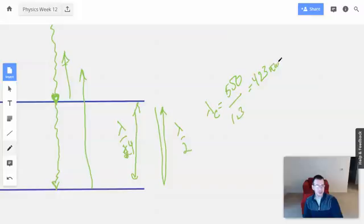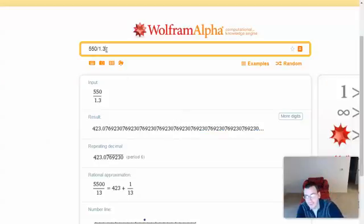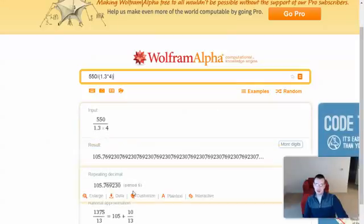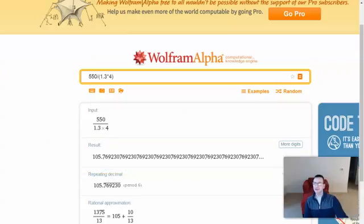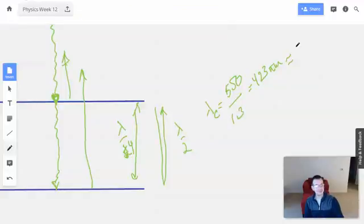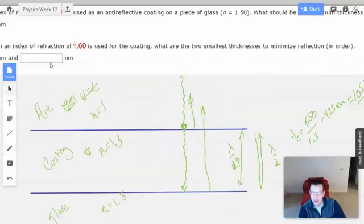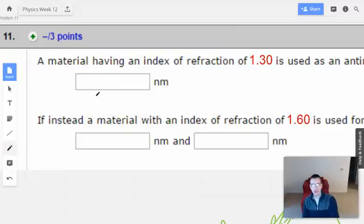So now that's the wavelength that we have in the light when it's actually in the coating. So we need a quarter of that to find what we need. So 105.8 nanometers. And that's the thickness that would cause this to minimize reflection.